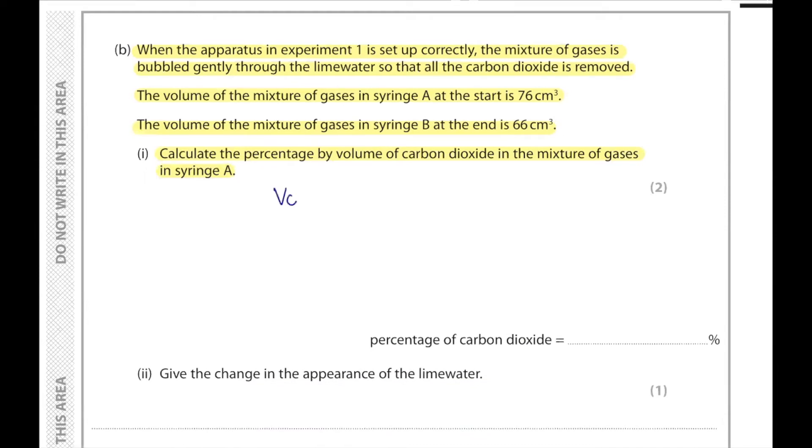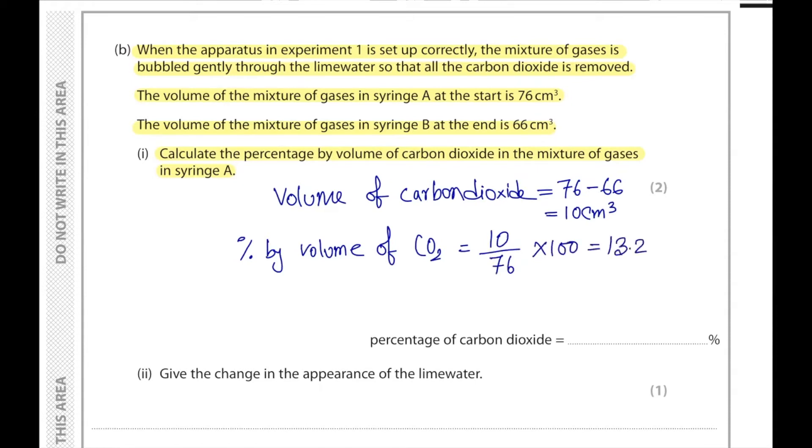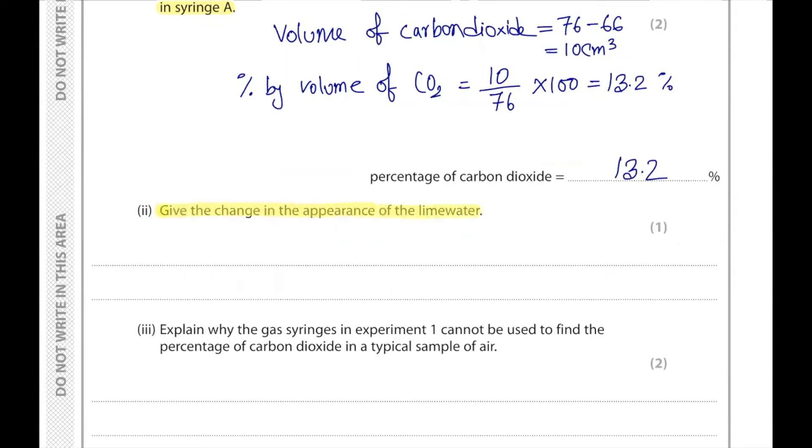We can see a total of 10 cm³ reduction. To calculate percentage by volume of carbon dioxide, we do 10 divided by 76 times 100. The answer comes to 13.2%.